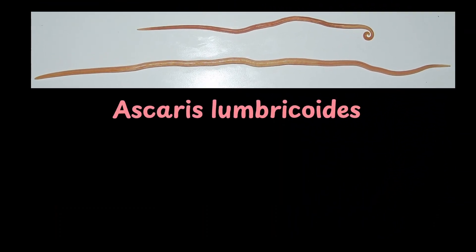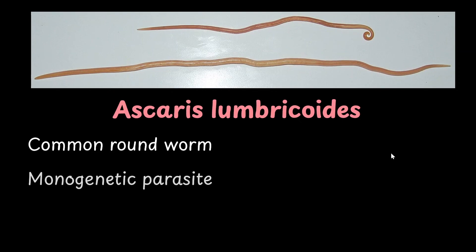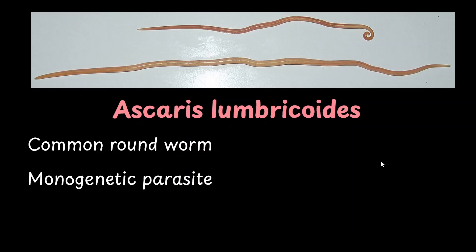We are talking about Ascaris lumbricoides, which is a common roundworm. It's a monogenetic parasite, meaning it is a living parasite on a single host. It is also one of the most common gut worm infections in humans.